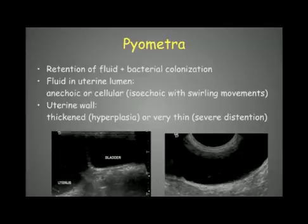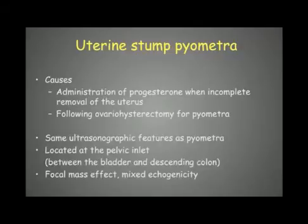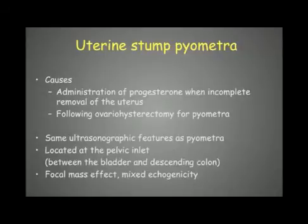We can also encounter stump pyometra, which occurs at the level of the uterine body and cervix. It happens when progesterone is administered after incomplete removal of the uterus, or following ovariohysterectomy performed just after a pyometra. It presents the same ultrasonographic features as pyometra but is localized at the pelvic inlet, between the bladder and the descending colon, appearing as a focal mass with mixed or hypoechoic echogenicity rather than the normal tubular structure.